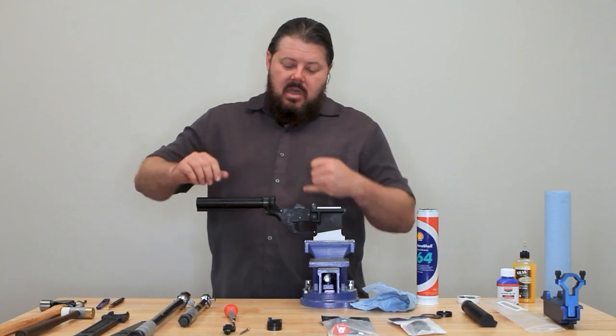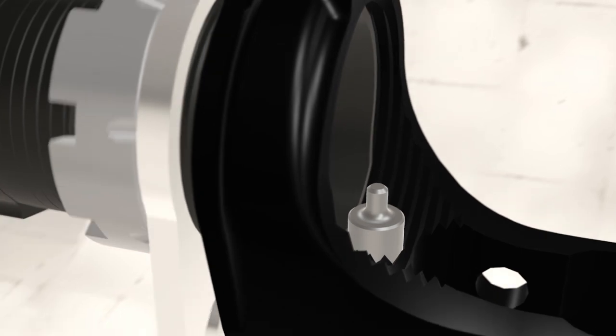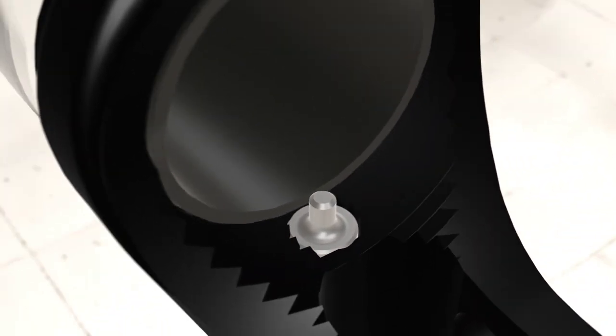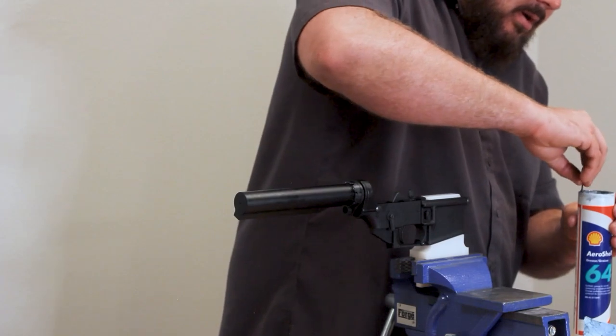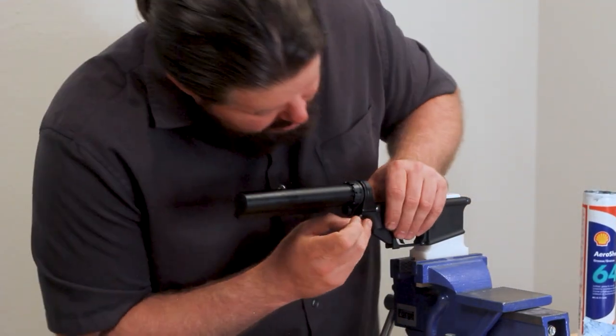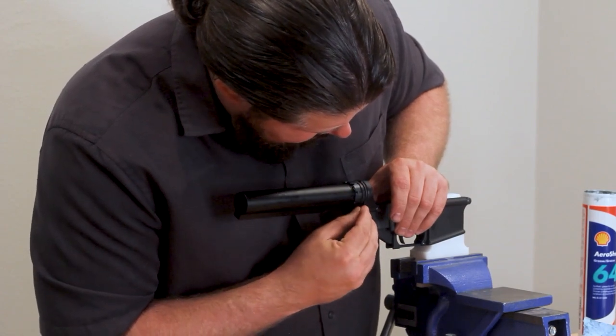So buffer retainer in there. I've tightened this until it's retaining it, and then I come past right there. So I'm holding my buffer retainer in. Grease on my takedown pin detent spring. Slide that guy in there.